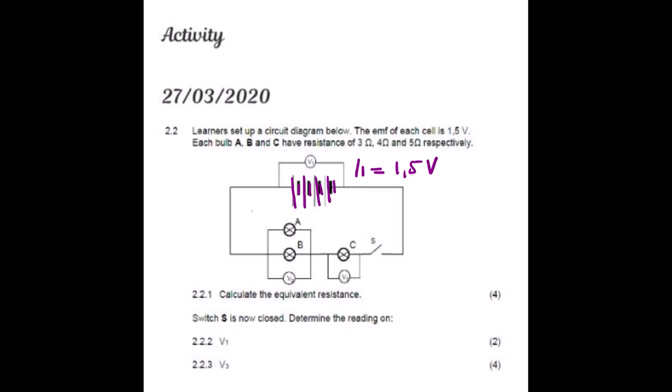Each bulb A, B, and C has a resistance of three, four, and five ohms respectively. We locate the three bulbs: A has 3 ohms, B has 4 ohms, and C has 5 ohms. Looking at the diagram, you can see that the circuit is open.